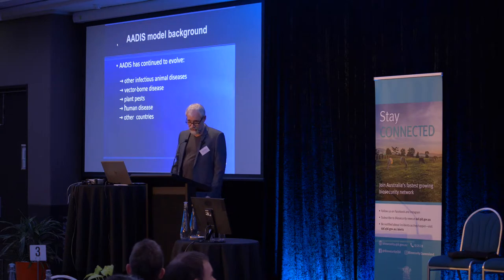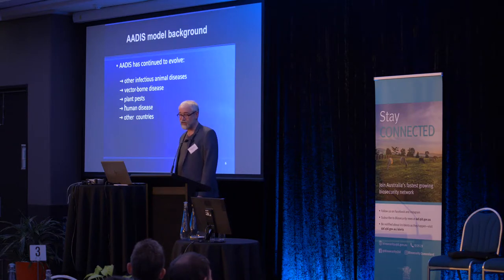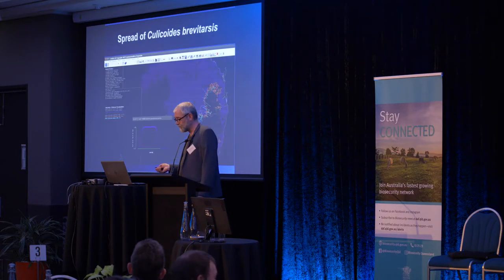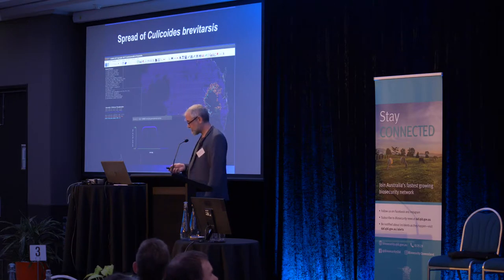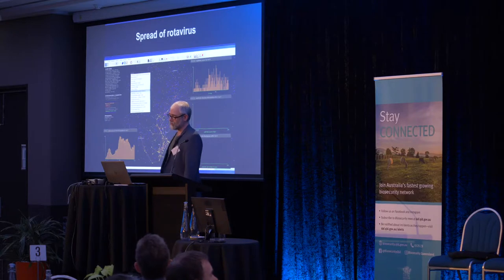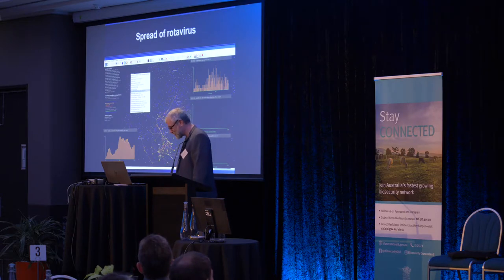Since we developed ATIS, beginning in 2012, it's expanded to other infectious animal diseases, vector-borne diseases, plant pests with the APTIS model, human disease, and other countries. There's a range of countries we're collaborating with, mainly on FMD but also African swine fever and classical swine fever. This is a snapshot of the model in a different mode — a geographical automata showing the spread of a midge as a potential vector of bluetongue. I'm also working with the Murdoch Children's Research Institute spreading rotavirus in the Indonesian region, looking at different vaccine strategies: neonatal versus infant.